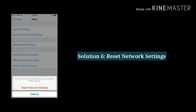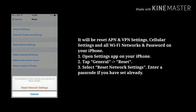Solution 6: Reset network settings. This will reset APN and VPN settings, cellular settings, and all Wi-Fi networks and passwords on your iPhone. First open the Settings app on your iPhone, then tap on General, next tap Reset. Next select Reset Network Settings and enter your passcode if you have one set.